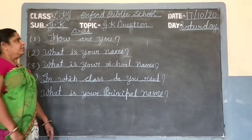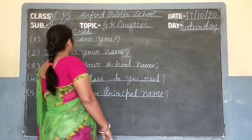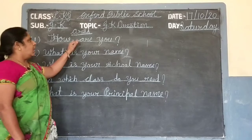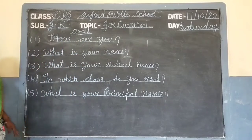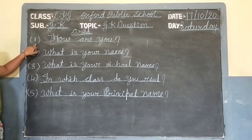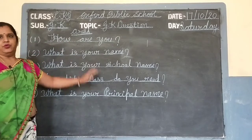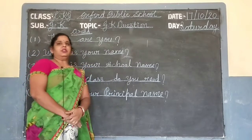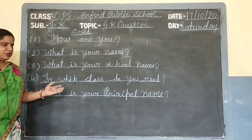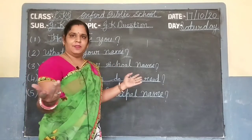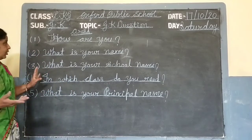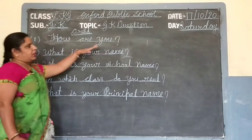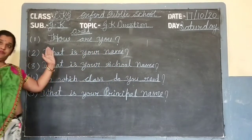Hello students. मैं आज आपको 5 questions write करवा रहे हूँ और read भी करवा रहे हूँ। इसमें ये 5 questions write किये हुए हैं — इससे हम आज oral करेंगे। First question है: How are you? Meaning — आप कैसे हो? तो आप बोलोगे: I am fine. पहला question: How are you? — I am fine.